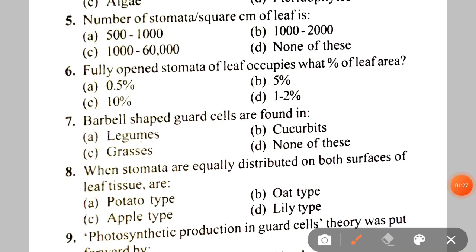Next question: the number of stomata per square centimeter of leaf is A. 500-1000, B. 1000-2000, C. 1000-60,000, D. None of these. The correct answer is C — 1000 to 60,000.